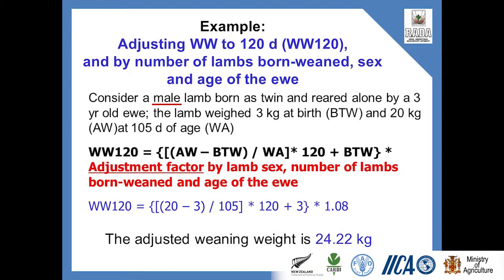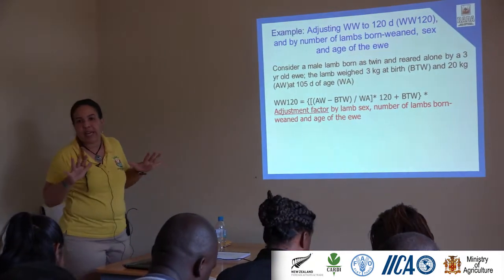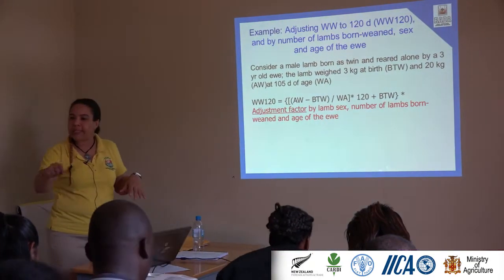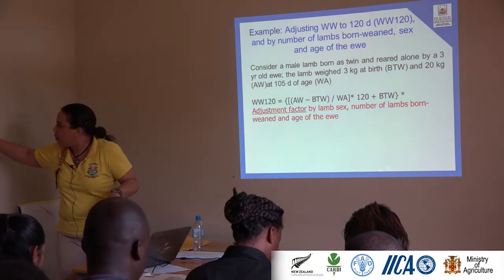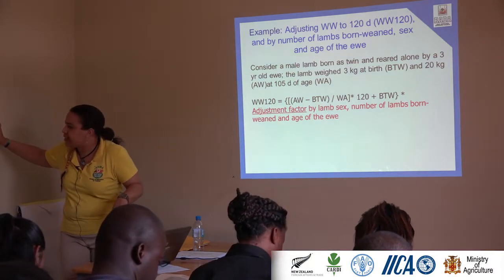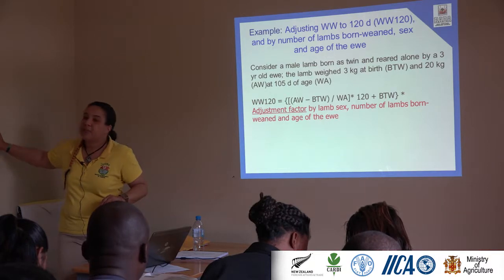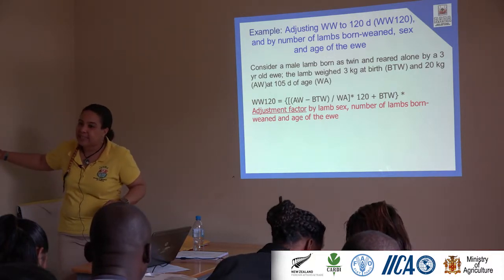Now everybody is on equal footing. That is when we need the table, because we're going to select which is the best animal. There's a little process to get there. I fill out my table with all my animals and their adjusted weights at 90 days.